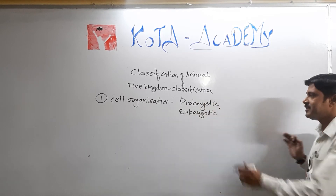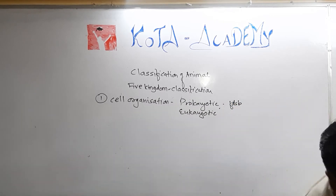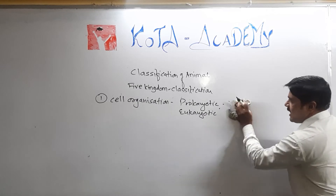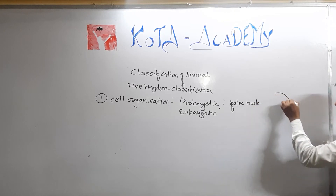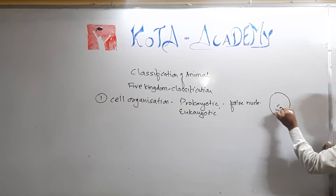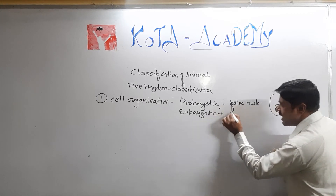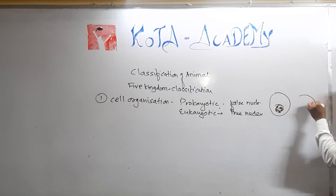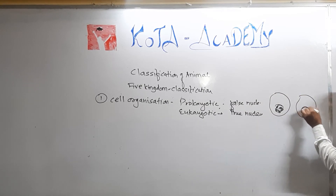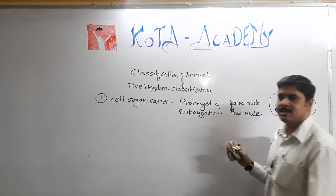Prokaryotic cell means the false nucleus — in this cell, the genetic material exists without a nuclear membrane, therefore it is known as a false nucleus. In eukaryotic cells, it is known as the true nucleus, because in this cell the nucleus is enclosed with a nuclear membrane.